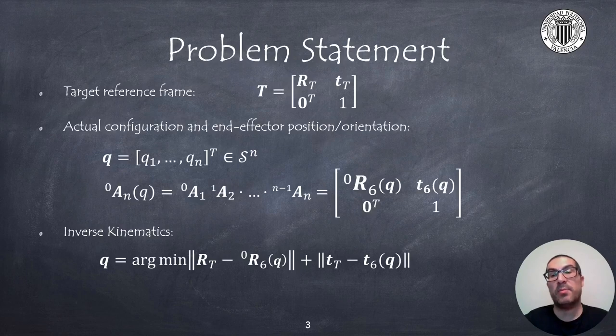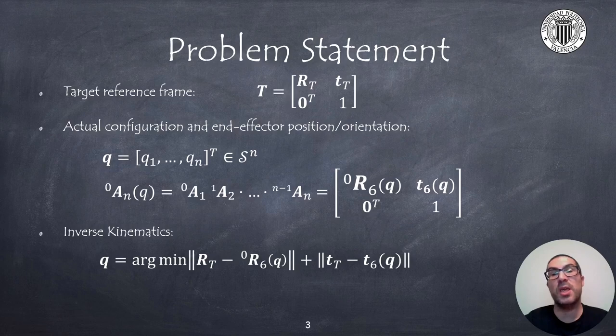The inverse kinematic problem consists of providing the values for joint positions given a target reference frame, usually provided as a homogeneous transformation matrix T. We will assume that we know all constructive parameters of the robot that will allow us to compute the end-effector position and orientation, so that the problem reduces to find the values for Q such that the end-effector position and orientation are the same as the target ones.